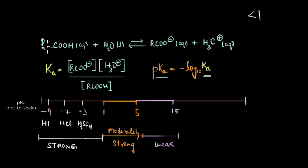And the pKa value of our carboxylic acid lies somewhere around this value, which is 5. So as you can see here, compared to mineral acids like HI, HCl and H2SO4, carboxylic acids can be considered only moderately acidic.